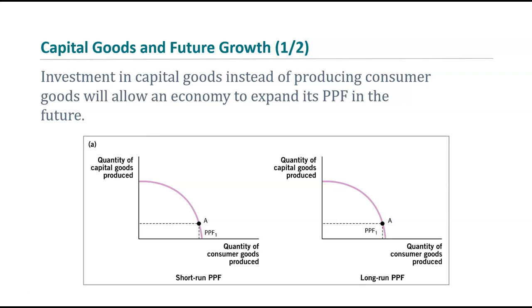Because we're at point A — putting a lot of resources toward consumer goods and fewer toward capital goods — our production possibilities frontier in the long run will move out some, but not a ton. It moves out at all because we did put some resources toward capital goods, which means we've improved our technology some, so tomorrow we'll be able to produce a little more than today. We will see our PPF shift outward in the long run.